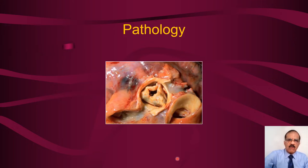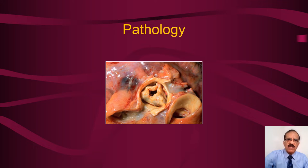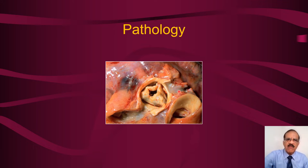Here you can see the aortic valve as if you are looking at it from the aorta side. This is a very thickened, roughened, deformed, and narrowed valve — this is an autopsy specimen of a very diseased valve. This is the aorta.